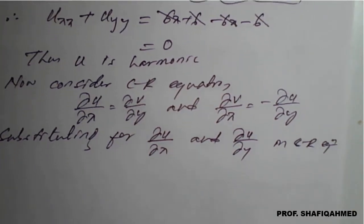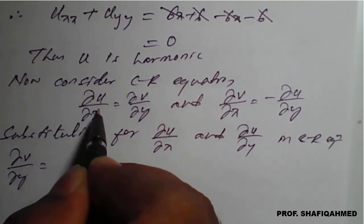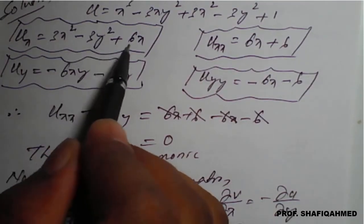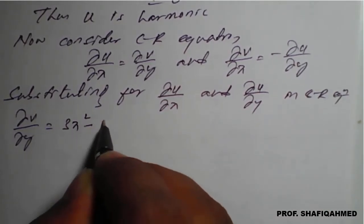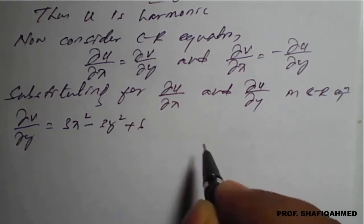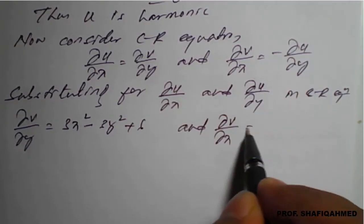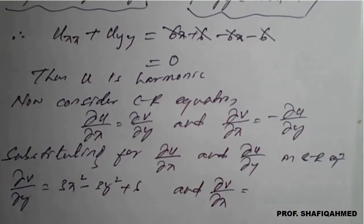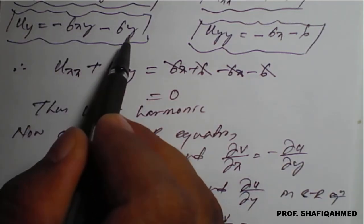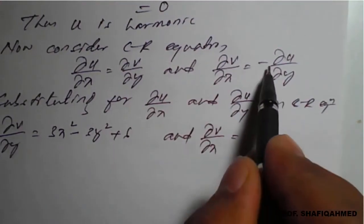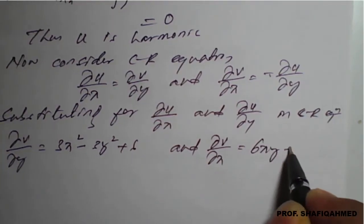And ∂v/∂x = -∂u/∂y. Since ∂u/∂y = -6xy - 6y, the negative signs cancel, so ∂v/∂x = 6xy + 6y. To get v from these two expressions we use integration. Integrating ∂v/∂y with respect to y gives v = ∫(3x² - 3y² + 6x) dy + f(x), where f(x) is an arbitrary function of x.